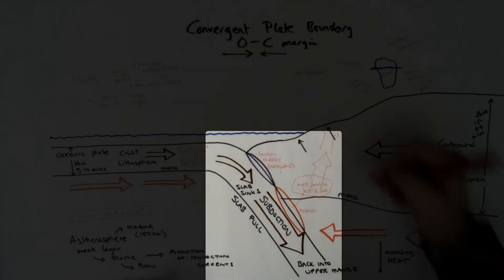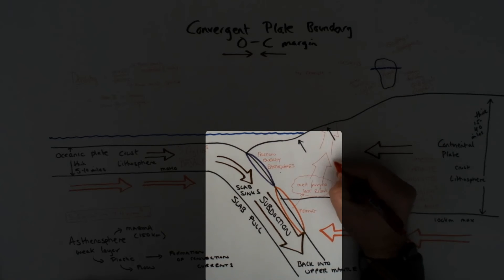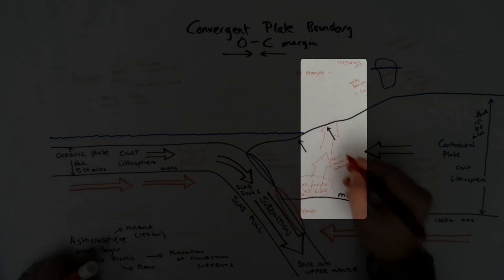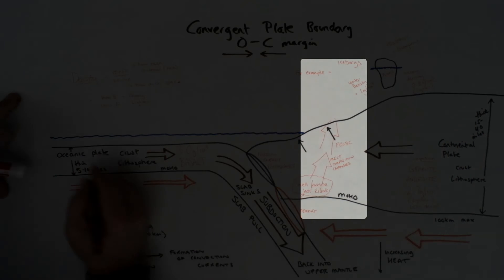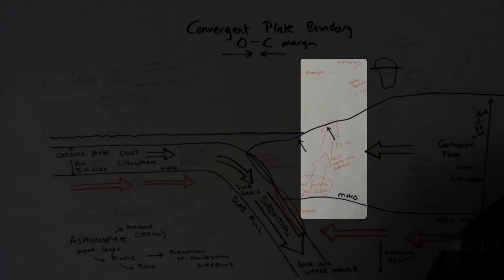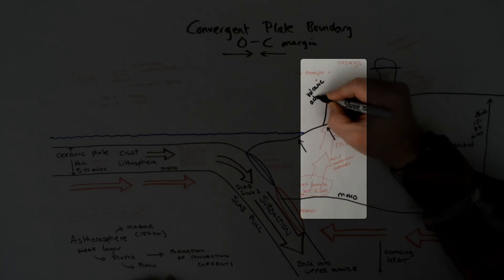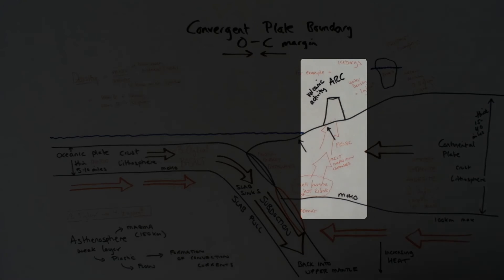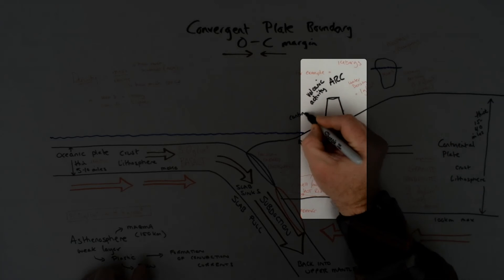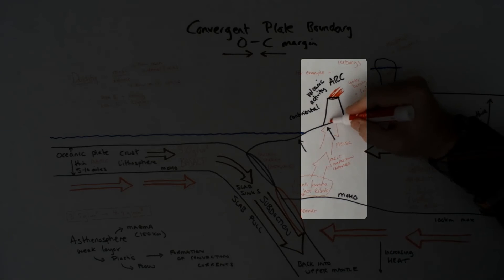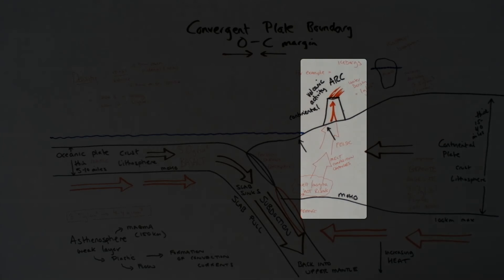The formation of magma from the melting of the descending plate and the continental plate forms within the continental plate itself and rises up. It melts through, burns through the continental plate on its way up as it's hot and rising, less dense and more buoyant. It reaches the surface and forms a chain or an arc of continental volcanic activity. This is close to the coastline, and there's a constant supply of magma from this subducting plate.